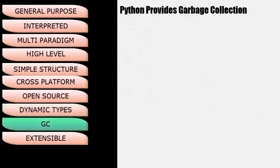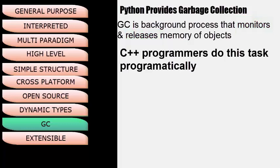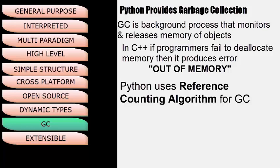The next feature is Garbage Collection. This monitors and releases memory automatically for objects. In languages like C++, programmers are responsible for allocation and deallocation of memory objects. If they fail to deallocate memory, it produces an out-of-memory error. Garbage collection is an assistant process for languages like Java or Python, which is why these languages are known as robust languages. Python uses the reference counting algorithm for garbage collection.